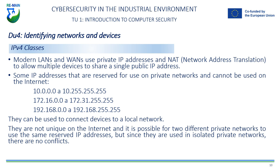These IP addresses are commonly used in private networks such as in homes, offices, businesses, and other organizations, and can be used to connect devices to a local network. Devices on a private network use these IP addresses to communicate with each other, but to connect to the internet, these IP addresses must be translated into unique public IP addresses using NAT (Network Address Translation). It is important to note that these reserved IP addresses are not unique on the internet and are used in many private networks around the world. Therefore, it is possible for two different private networks to use the same reserved IP addresses, but since they are used in isolated private networks, there are no conflicts.